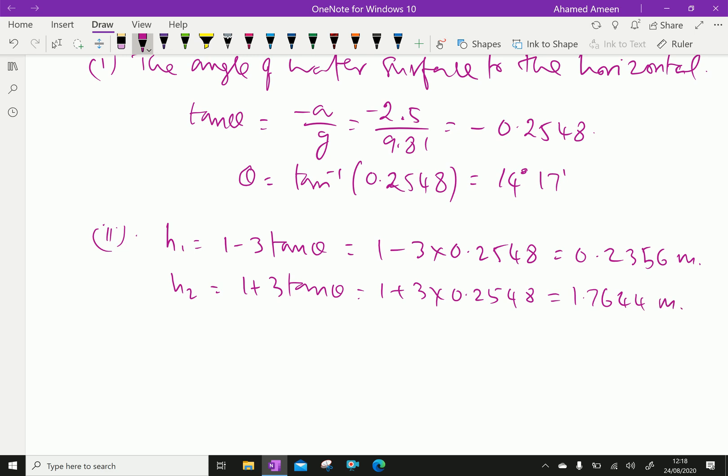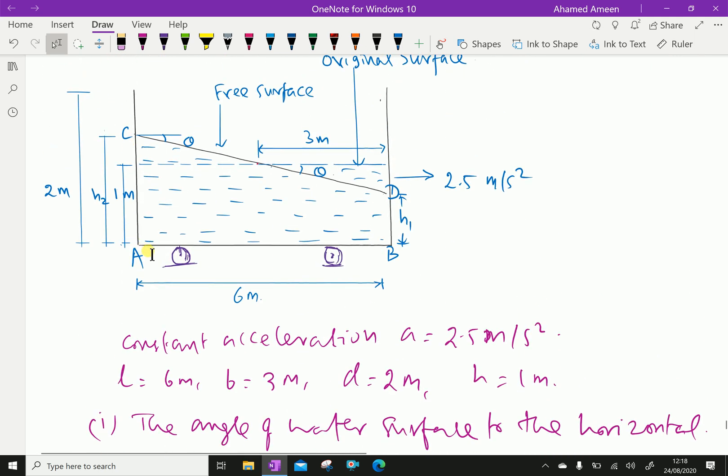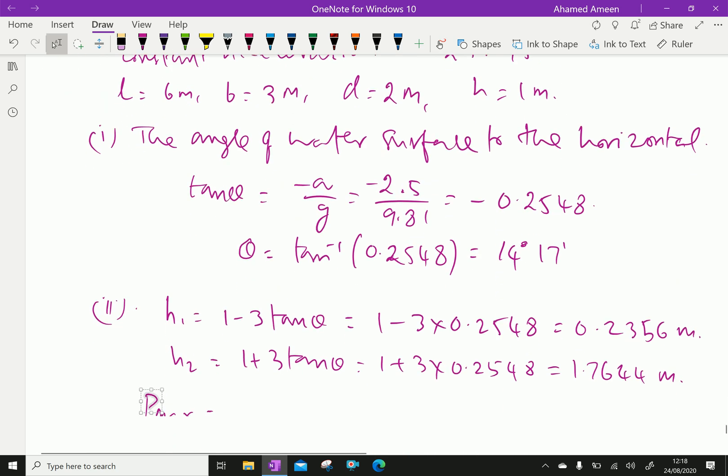Now we will calculate P max, the maximum pressure intensity at the bottom. The maximum intensity of pressure is at point A, and the minimum intensity is at the other end, because this has lower height and that has more height.